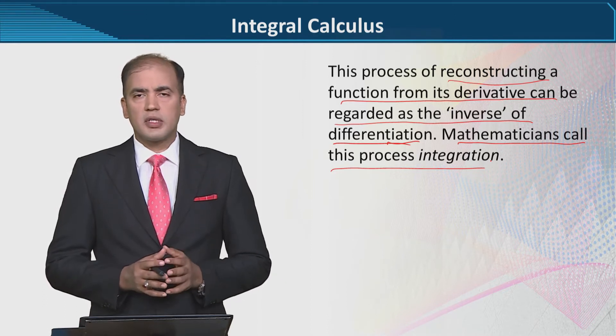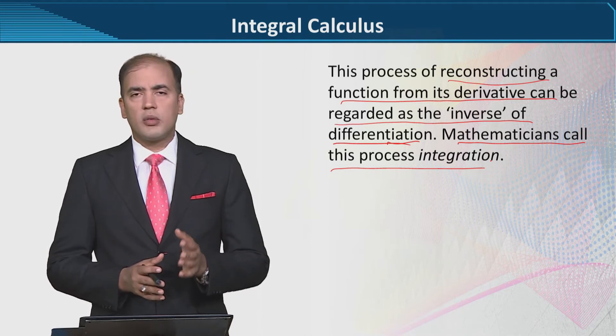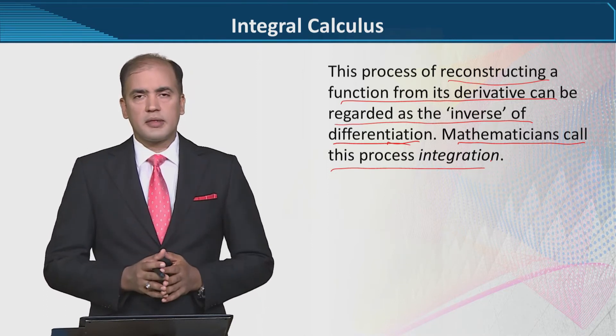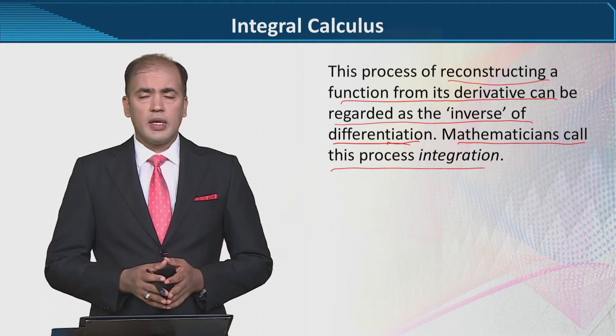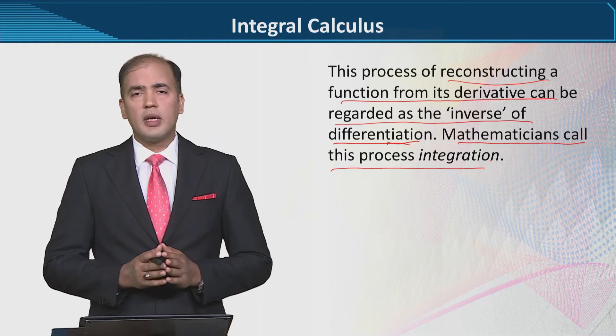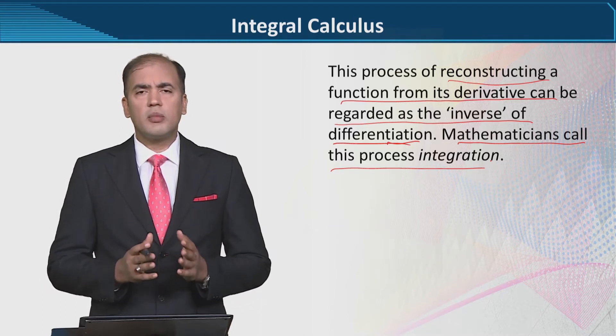For example agar woh cubic function tha, to woh quadratic reh jata tha. Or agar quadratic hota tha, to linear ban jata tha. And so on. So differentiation reduced the things. And that is the function. Lekin jo hum integration ki baat karte hain, jo reverse process hai, definitely us mein jo function hai usse grow karna chahiye. Bada na chahiye. In other words us ki degree bada na chahiye.